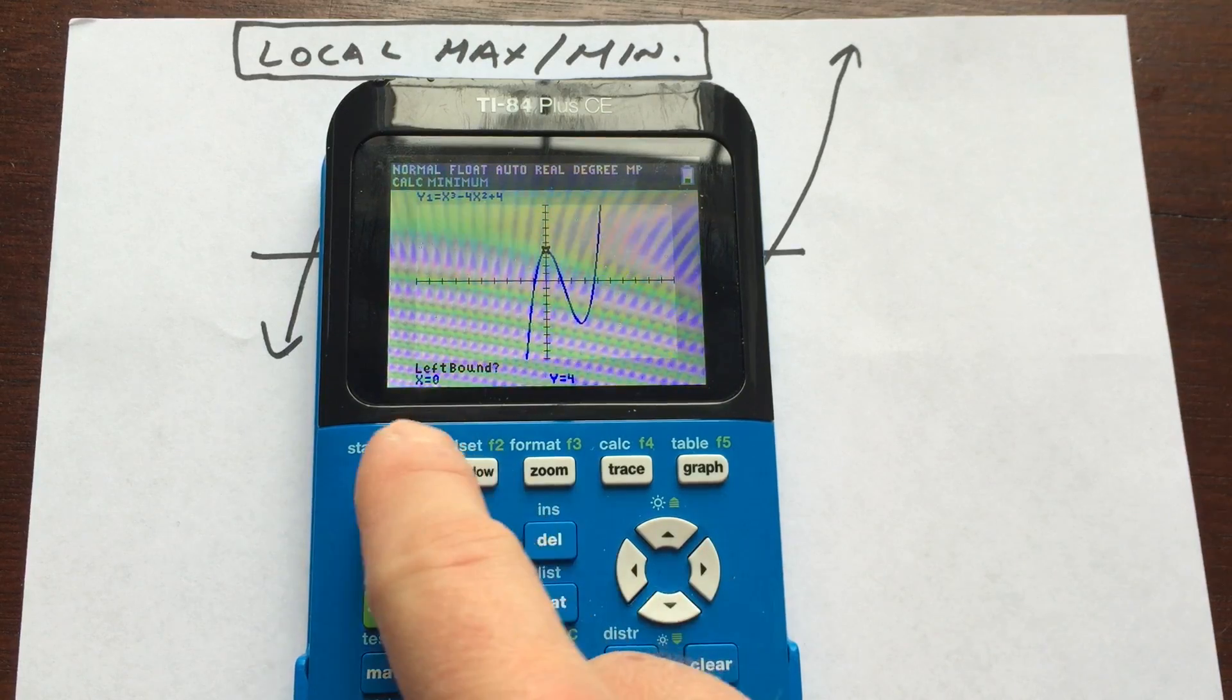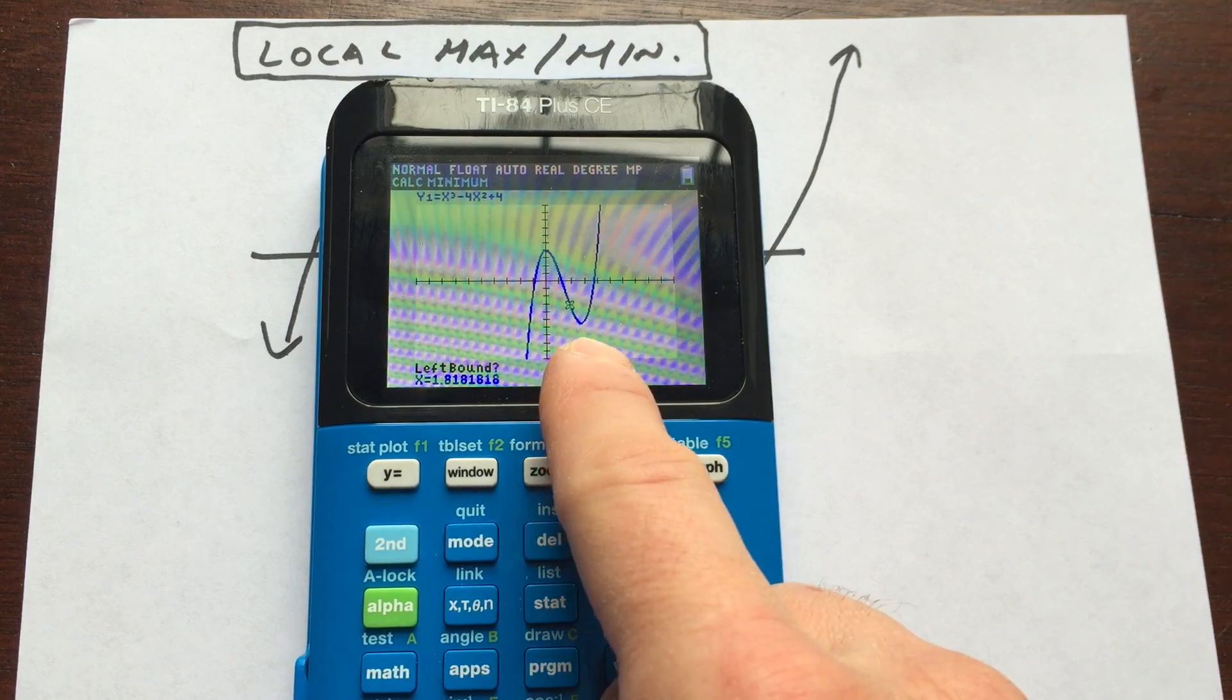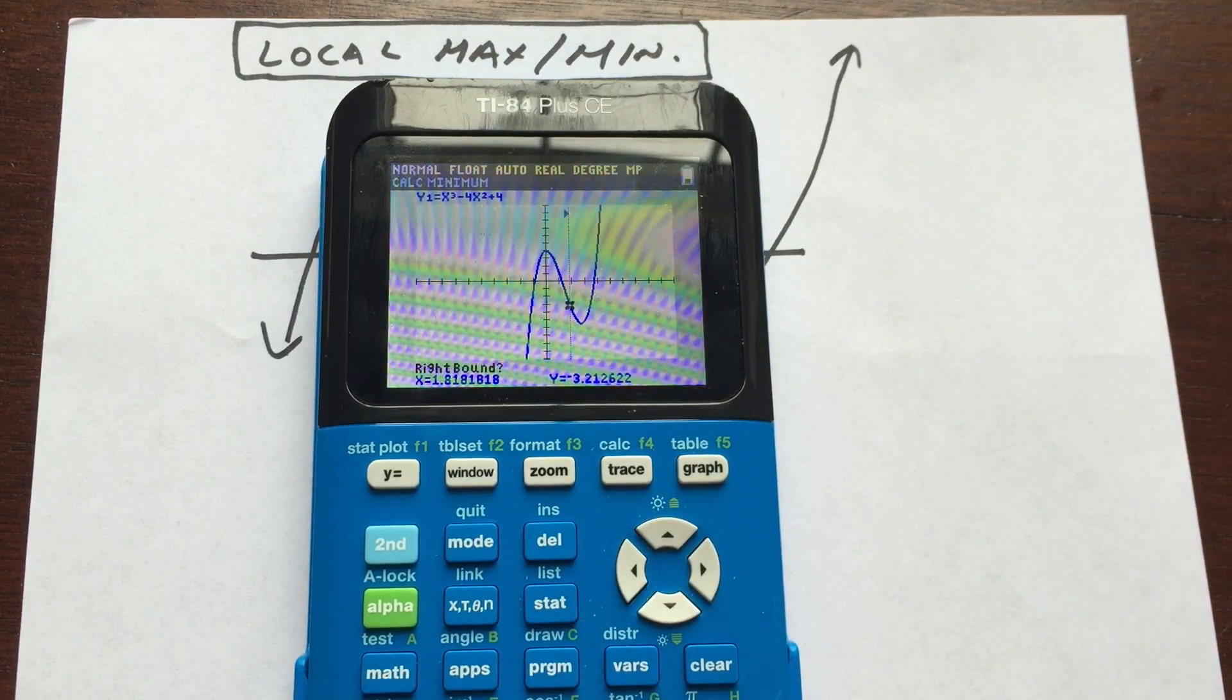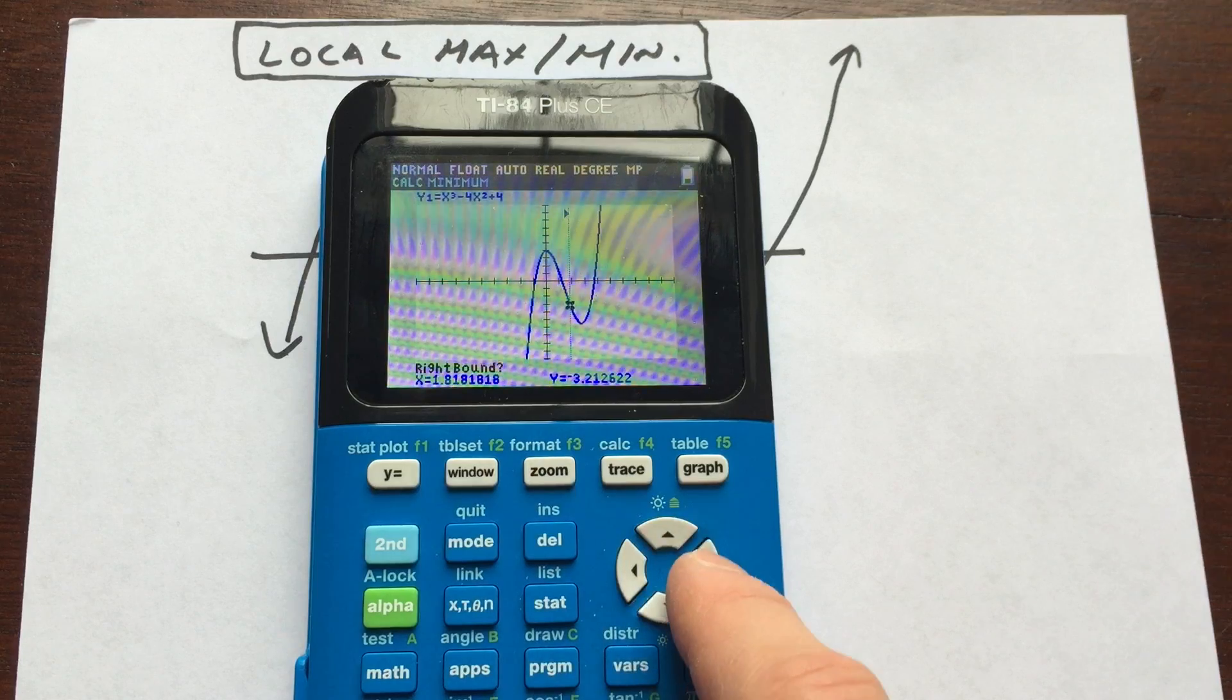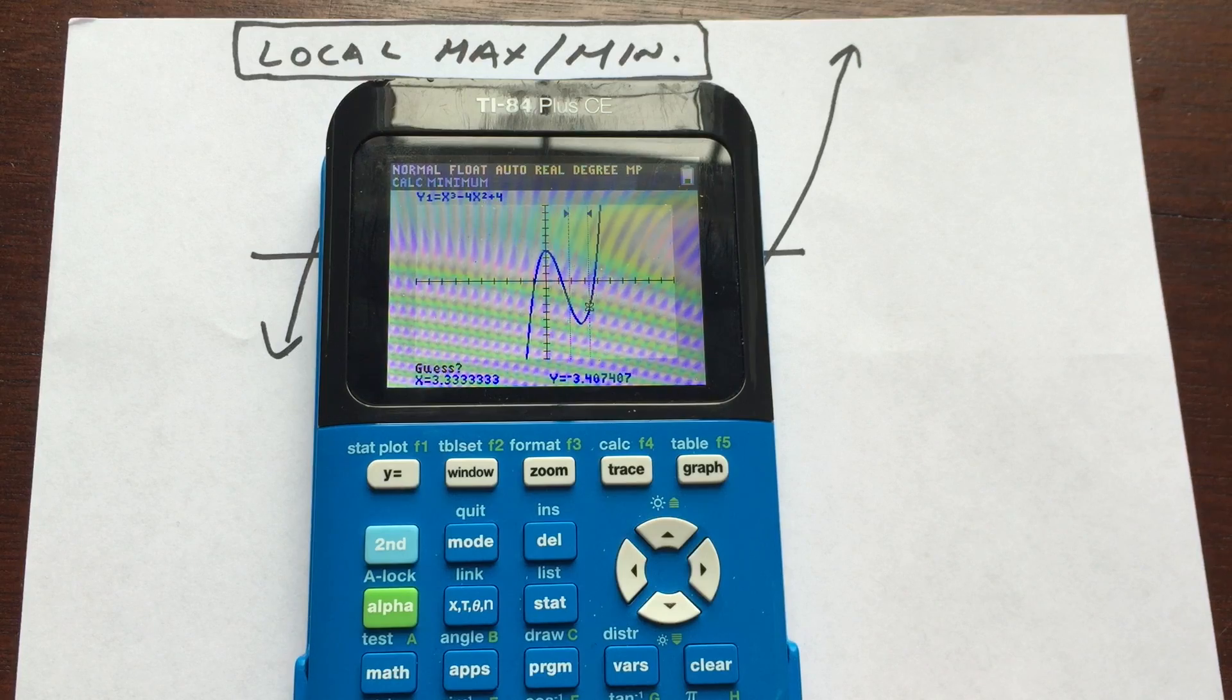And I'm going to, you can see it says left bound. So I'm going to arrow just a little bit to the left of that low point right there. And I'm going to press enter. It says right bound. I'm going to arrow just a little bit to the right of that low point. Make sure I just go a little bit past. Enter one more time.